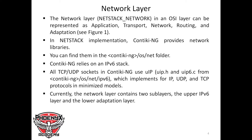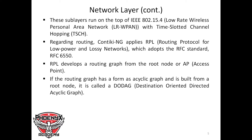The network layer currently contains two sub-layers: the upper IPv6 layer and the lower adaptation layer. These sub-layers run on top of the IEEE 802.15.4 standard, commonly known as the low-rate wireless personal area network, with Time-Slotted Channel Hopping — TSCH.